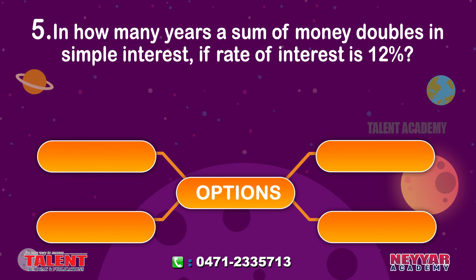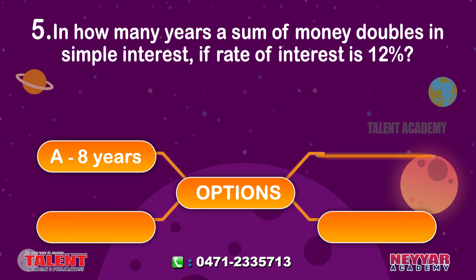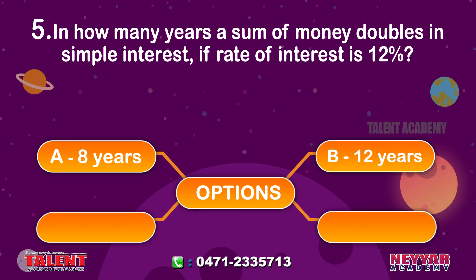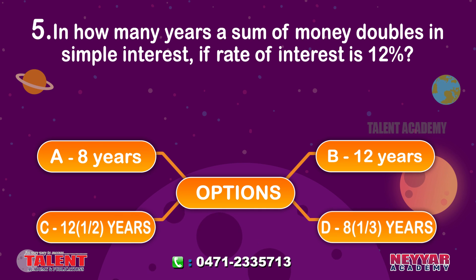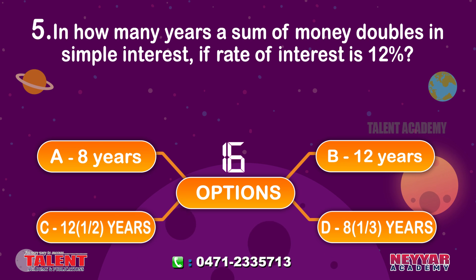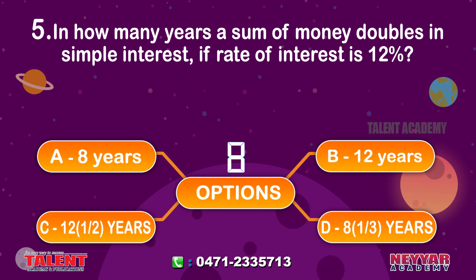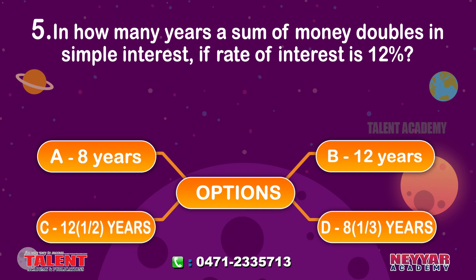In how many years does a sum of money double under simple interest if the rate of interest is 12%? Options: A 8 years, B 12 years, C 12½ years, D 8⅓ years. The correct answer is D 8 and 1/3 years.